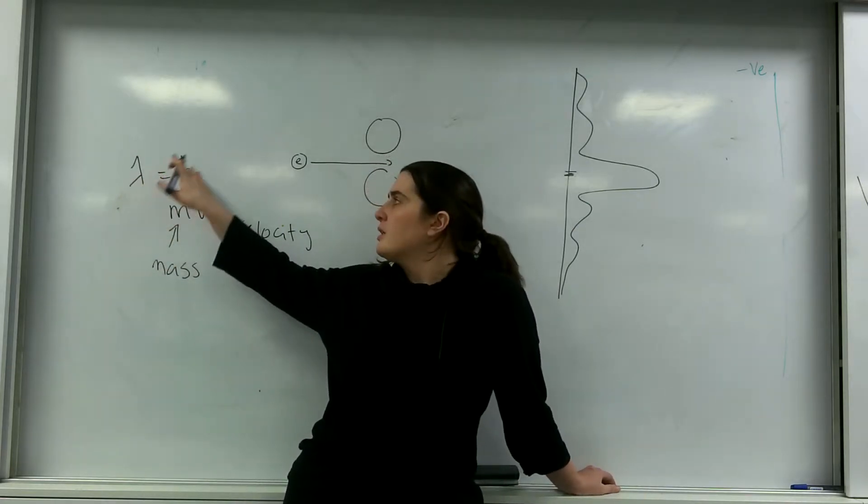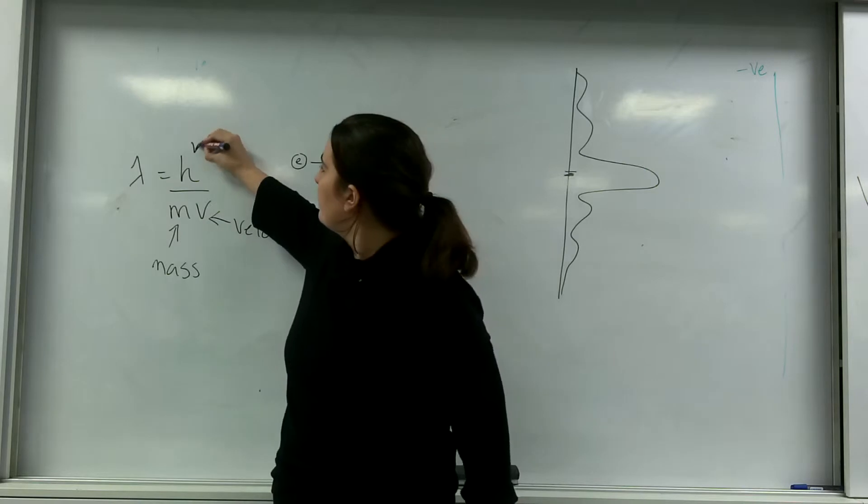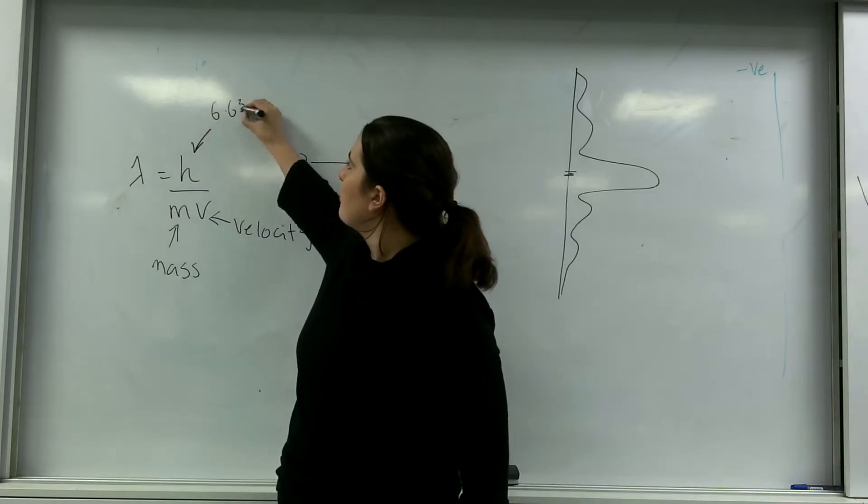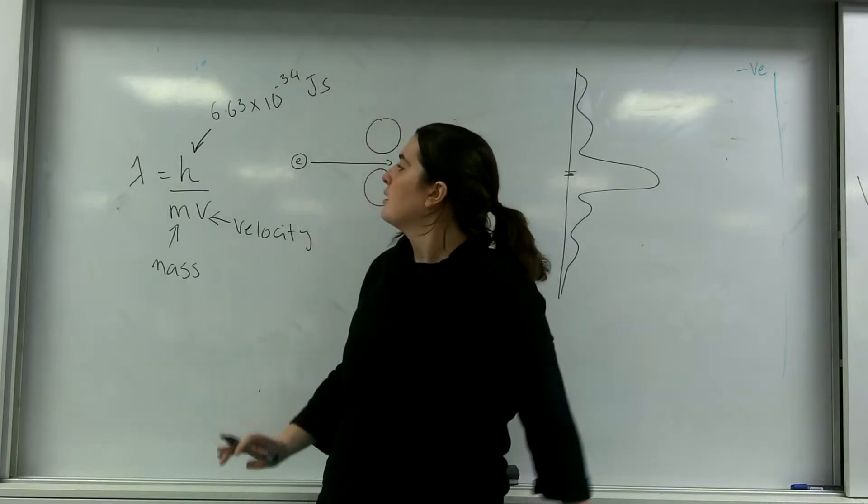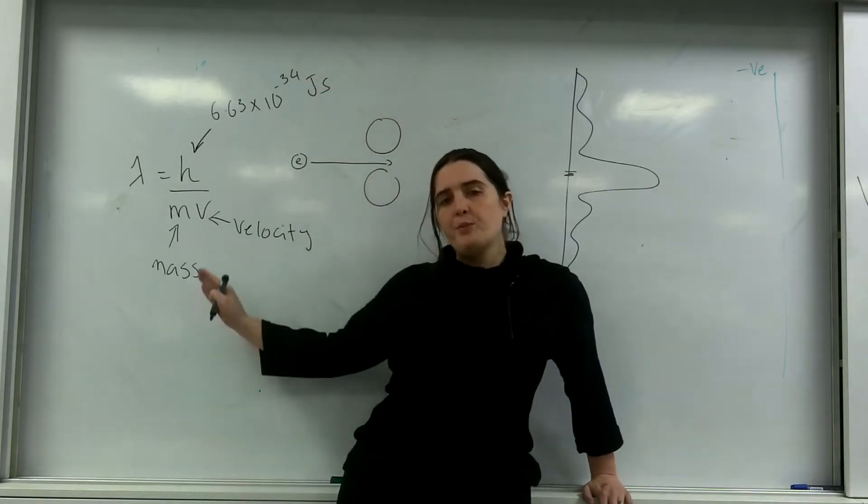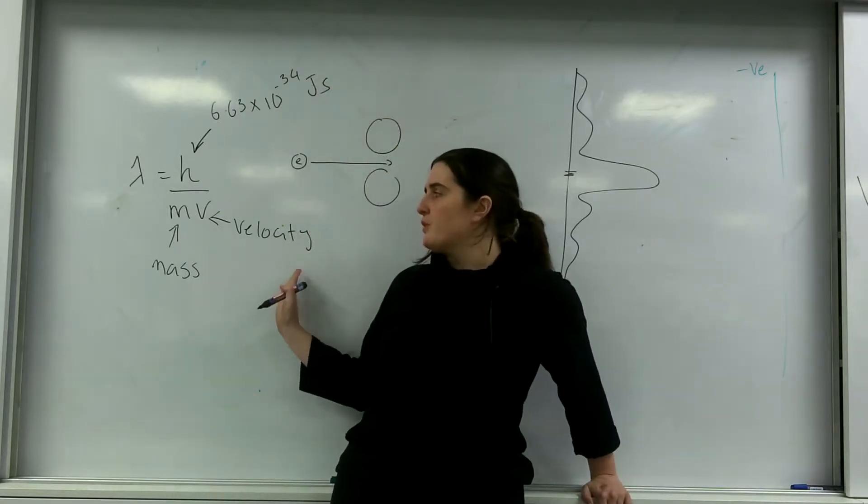Wavelength is Planck's constant, which is 6.63 times 10 to the minus 34 joule seconds, divided by the object's mass and the object's velocity.